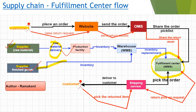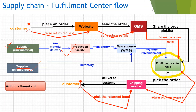Let's follow the black arrows for the customer's forward journey. The customer visits the website and places an order. The website system sends the order to the order management system. The OMS shares a pick list with the fulfillment center. The FC then begins the fulfillment process — picking, packing, and generating the shipping label — and contacts the shipping service. The parcel is ready for pickup, the shipping service collects it from the FC and delivers it to the customer. This completes the forward journey.